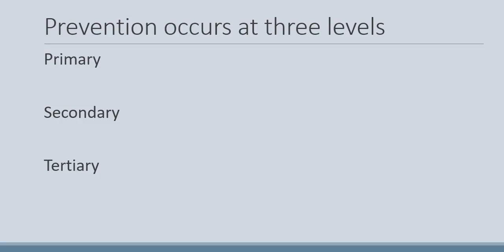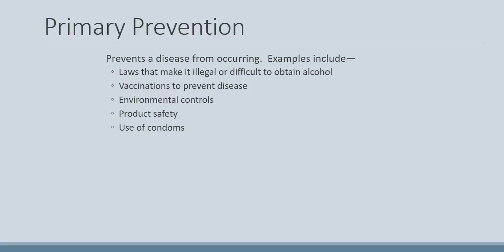The next important concept is prevention at three levels: primary, secondary, and tertiary. Primary prevention is defined as preventing a disease from occurring. Examples include laws that make it illegal or difficult to obtain alcohol for certain age groups, and vaccinations used to prevent disease.